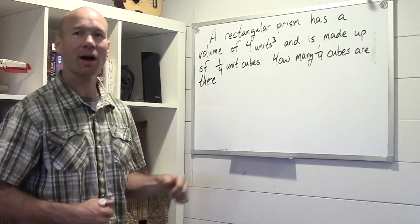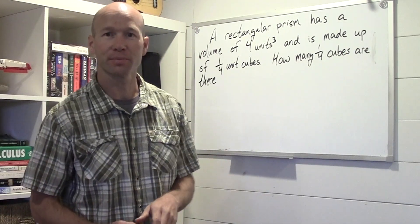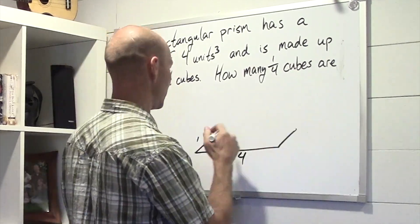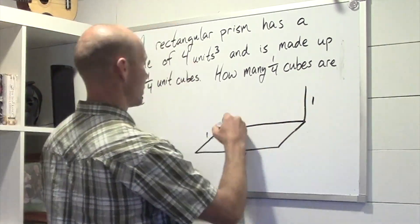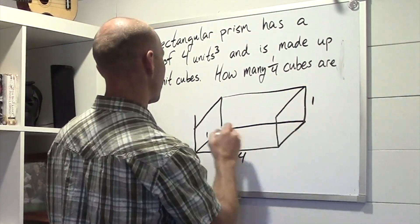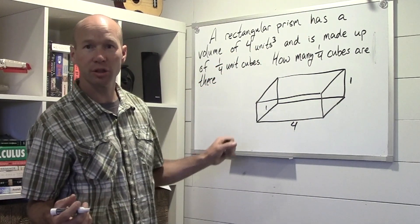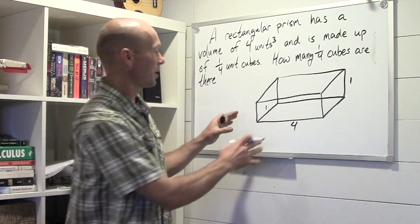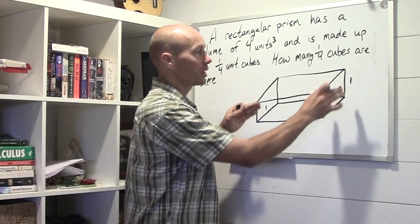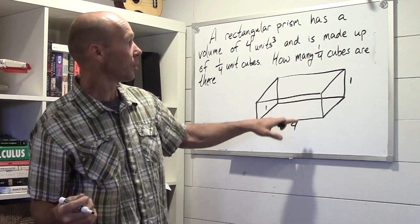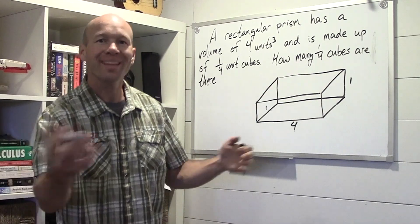Well, first off, we need to be able to draw this. 1 times 4 times 1 is 4 units cubed. So we have a base of 4 and 1 and a height of 1.